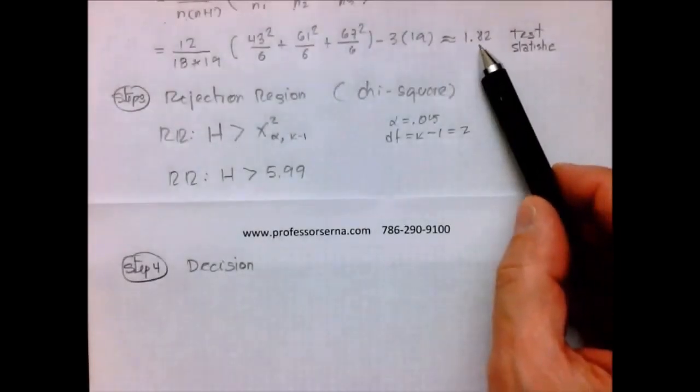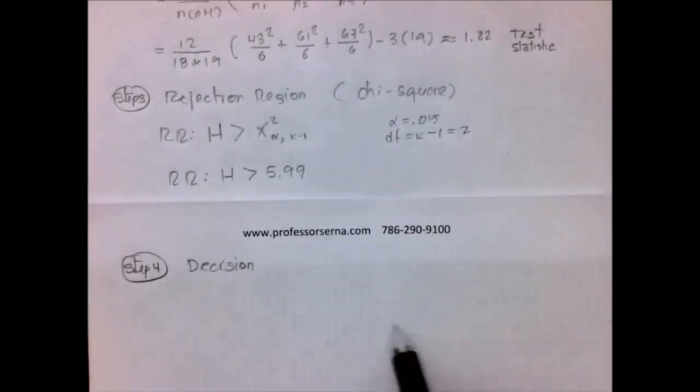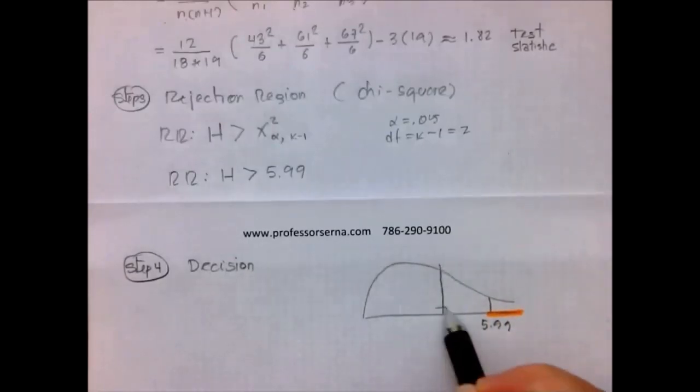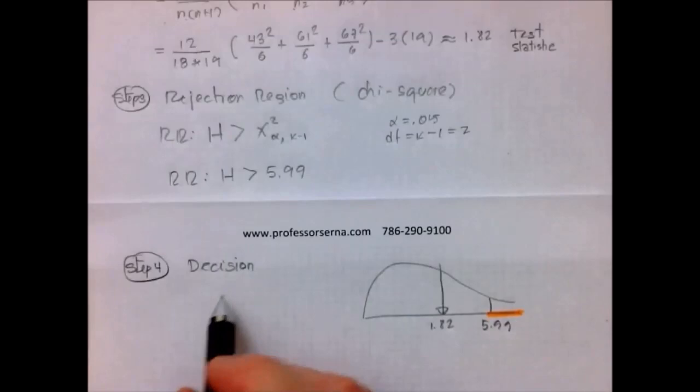The test statistic doesn't fall in the rejection region. The chi-square distribution looks something like this. The critical value is 5.99, which means that our rejection region is going to be this region here. And the test statistic is only 1.82. So no, it doesn't fall in the rejection region. So our decision is to fail to reject H0.